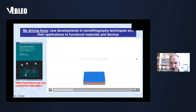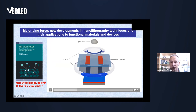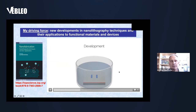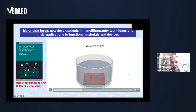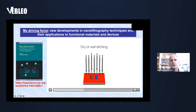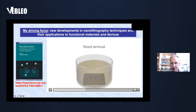In optical lithography, you spin-coat your sample with a photoresist, then use a lens system and a photomask with a drawn pattern that you transfer into the resist. After developing the resist, it takes the same shape as the patterns on the mask. With an etching process you transfer these patterns into your sample, and by removing the resist you have your pattern in the material.